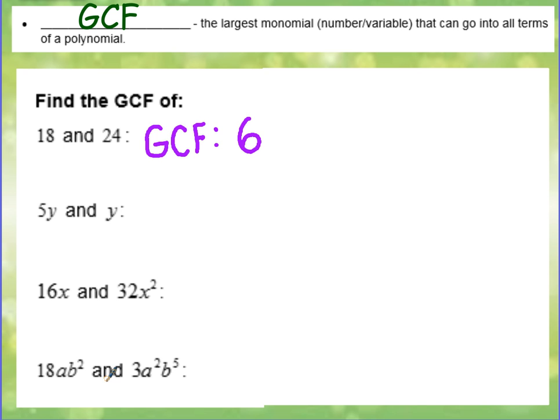5y and y. Here we have a combination of numbers and variables. If we take a look at the numbers first, a 5 and a 1, technically it doesn't have a GCF because really the GCF is 1. And if it is 1, we don't like to use that. So 5 and 1, we will just leave that blank. And then they both have a y. So they both have a y in common. Well, then y is the GCF.